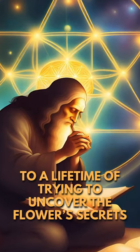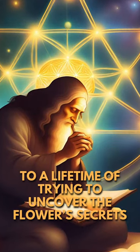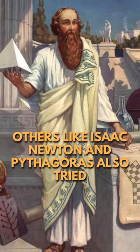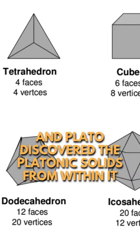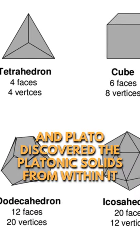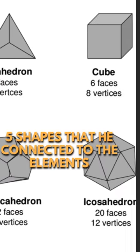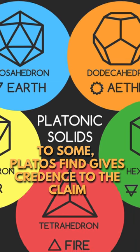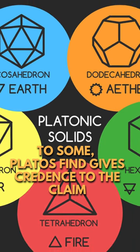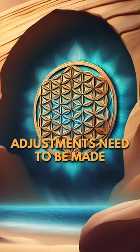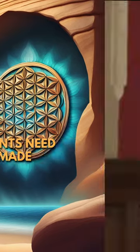This led da Vinci to a lifetime of trying to uncover the flower's secrets. Others like Isaac Newton and Pythagoras also tried, and Plato discovered the Platonic solids from within it — five shapes that he connected to the elements. To some, Plato's find gives credence to the claim that the flower shows the foundations of life, yet others suggest that to find its secrets, adjustments need to be made.